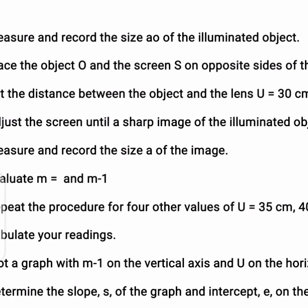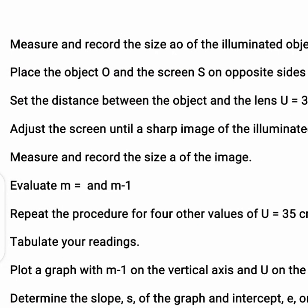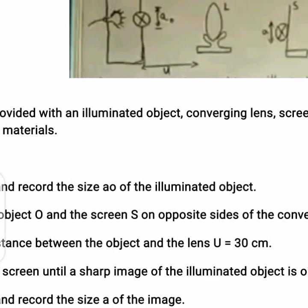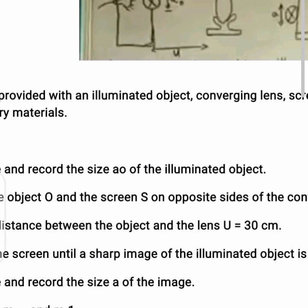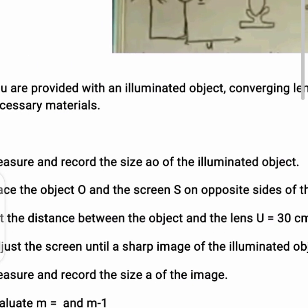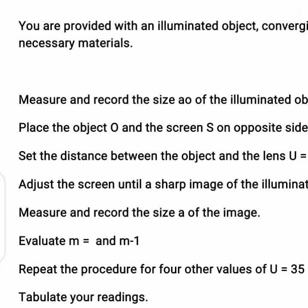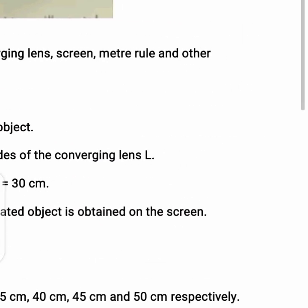Evaluate m and m⁻¹. m is actually magnification. You can use the formula: magnification m equals image height over object height, that is a over a₀. If you are told to use distances, magnification could be v over u. Here the magnification should be a over a₀ in each case. Repeat the procedure by varying the distance u to be 35, 40, 45, and 50 centimeters, finding the value of m in each case.